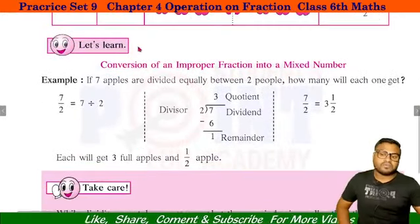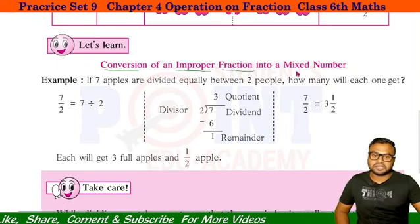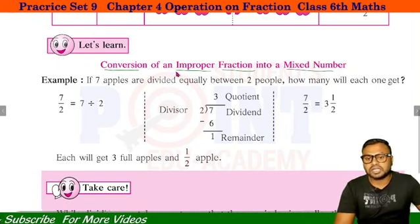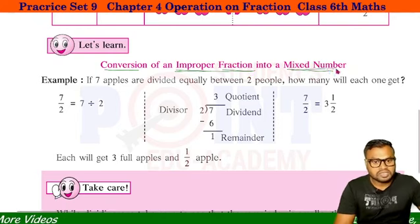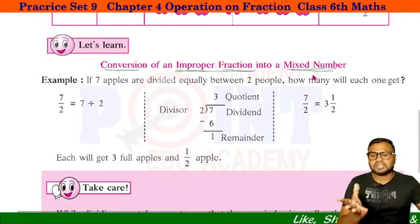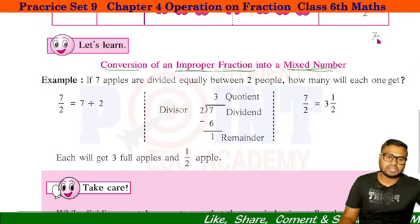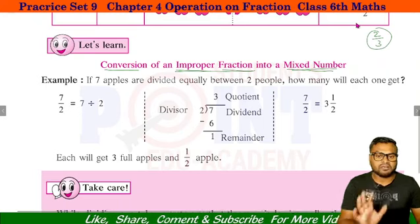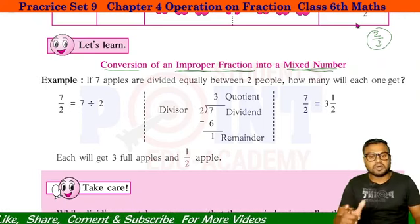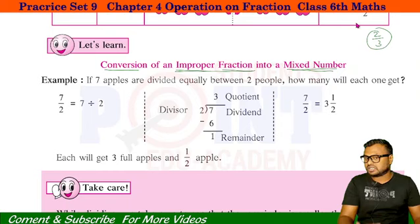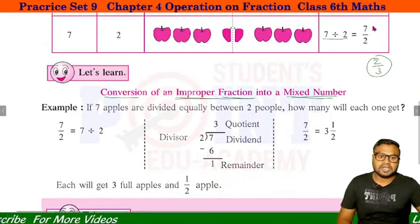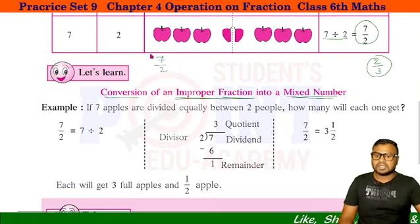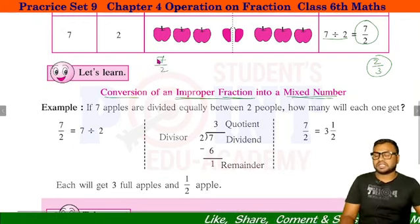आज का जो topic है वो है Conversion of Improper Fraction into Mixed Fraction। तो सबसे पहले दो बातें समझना जरूरी है कि Improper Fraction क्या है और Mixed Fraction क्या है? Fraction मतलब अपॉन वाले नंबर, जैसे 2 upon 3 यह fraction है। Improper Fraction किसे कहते हैं? 7 by 2 — इसे हम कहेंगे Improper Fraction।